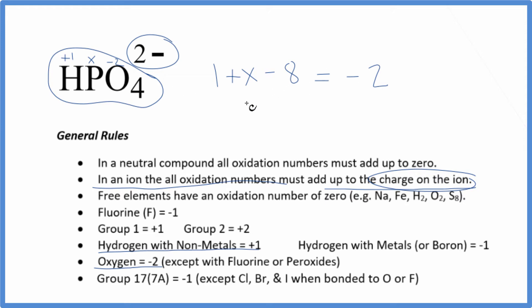Now we just solve for X. X minus 7 equals minus 2. We add 7 to both sides. So 7 and minus 2 gives us a positive 5.